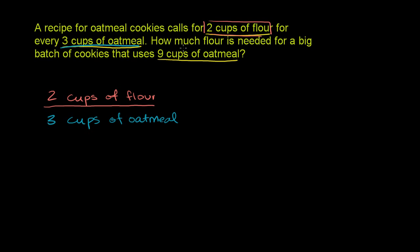Now, we need to figure out how much flour is needed for a big batch that uses nine cups of oatmeal. So this is the same thing as, and this is what we need to figure out, we need to figure out how much. So let's just call that the amount of flour we need for this larger batch. Let's call it x. That's equal to x cups of flour for nine cups of oatmeal, for every nine cups of oatmeal.